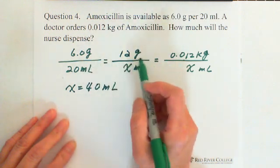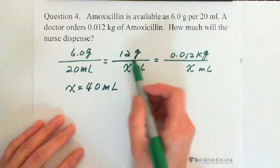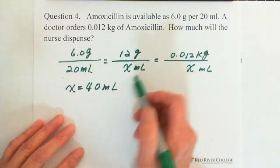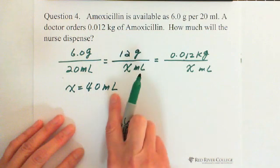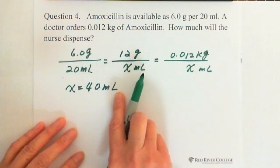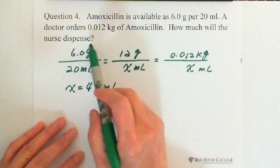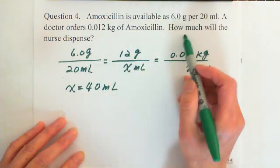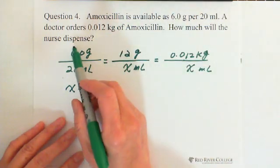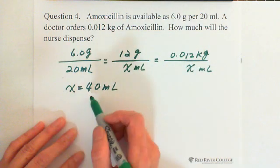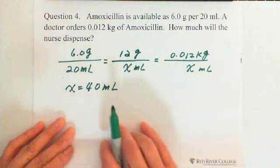Because you need more medicine, you need more volume. So the answer is we need 40 milliliters of medicine. That is how much the nurse will dispense — a total of 40 milliliters.